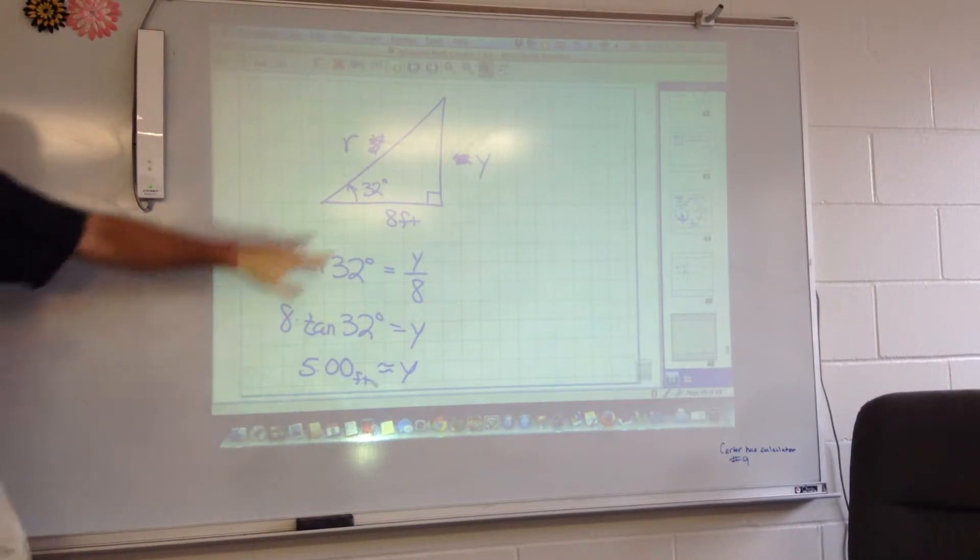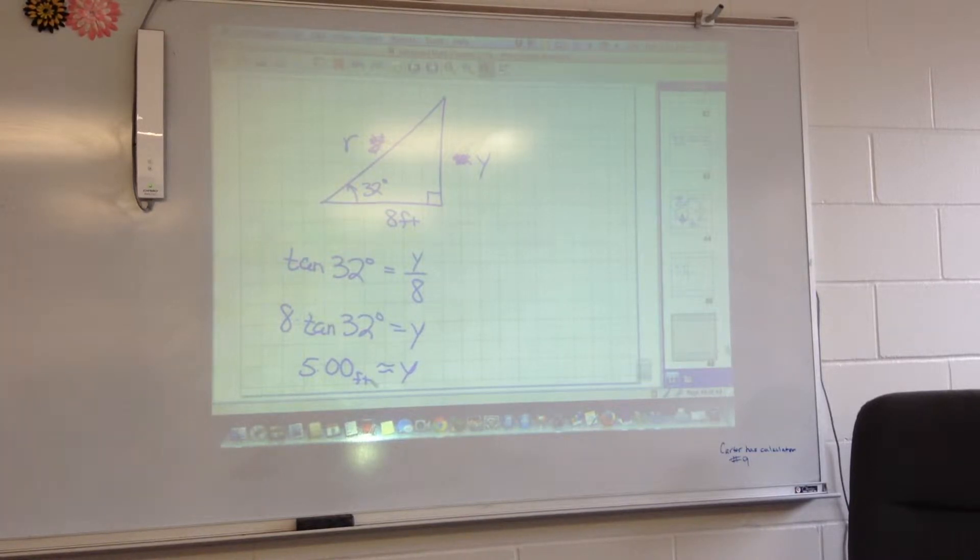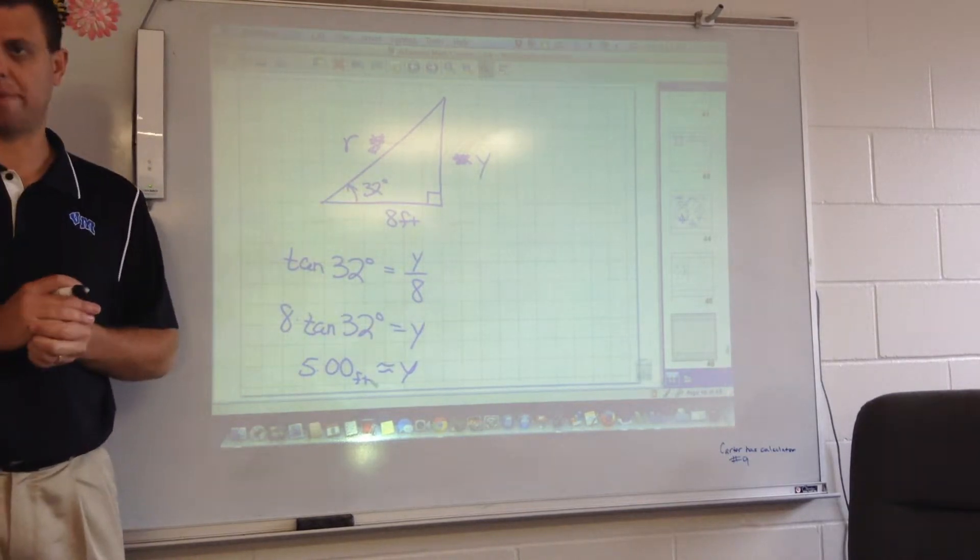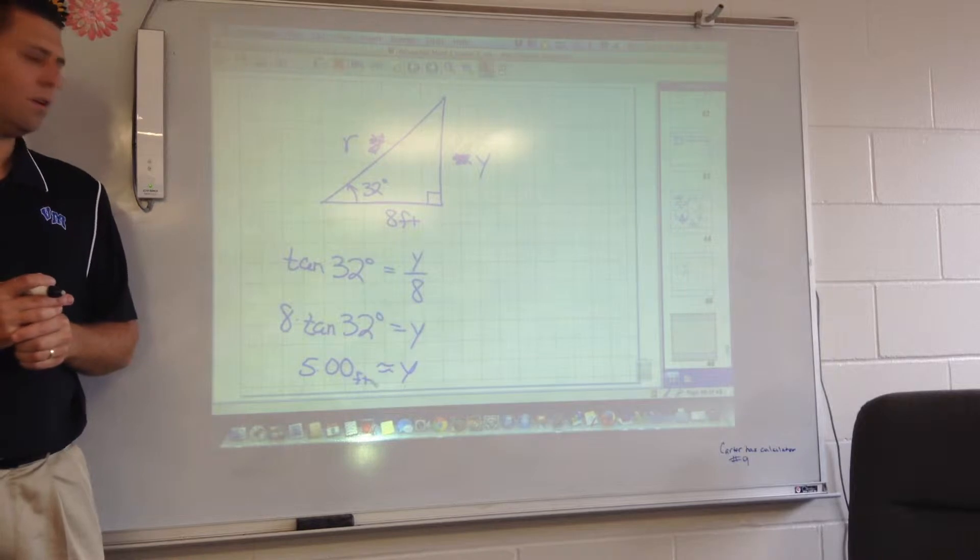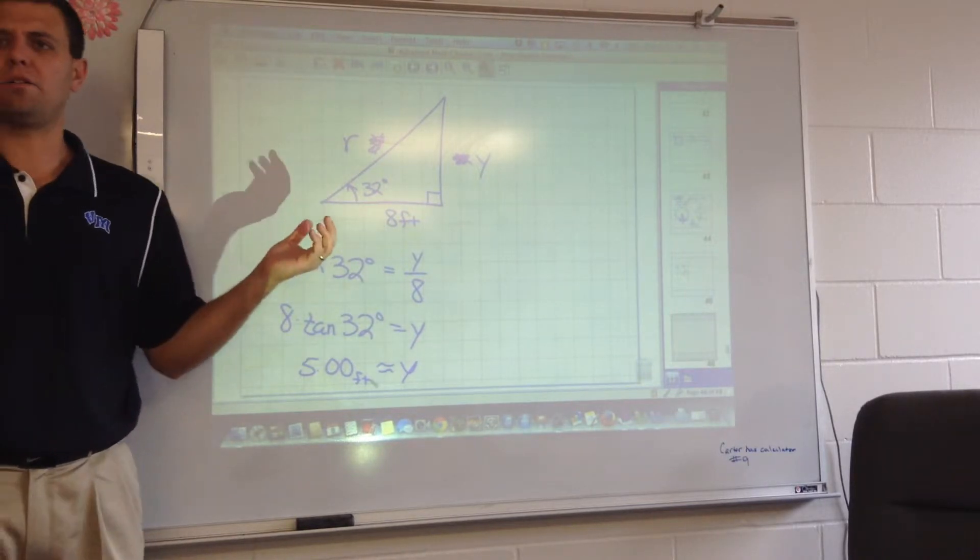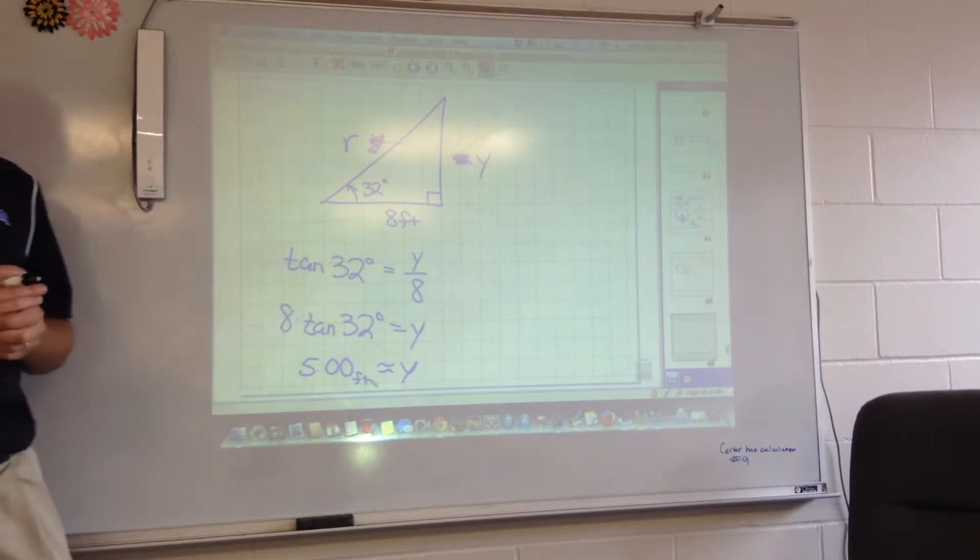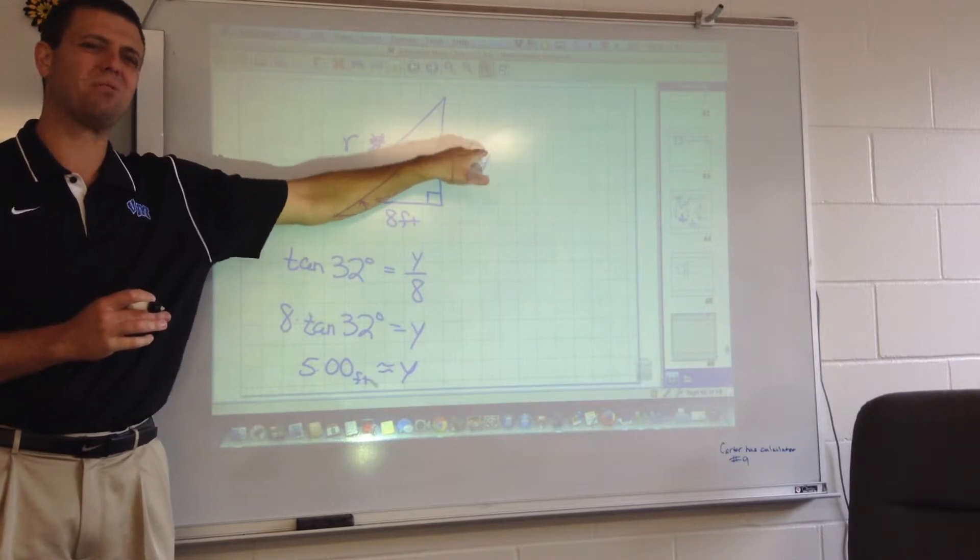All right, so there's our Y value. So now I know Y is about 5.00 feet. But if you wanted to use Pythagorean theorem at this point, I would want you to actually use that 4.998954815 number. How much fun does that sound like? Would you have to use all the decimal points? Yep. Because if you just use 5, you're going to get an answer that's going to be off just a little bit.